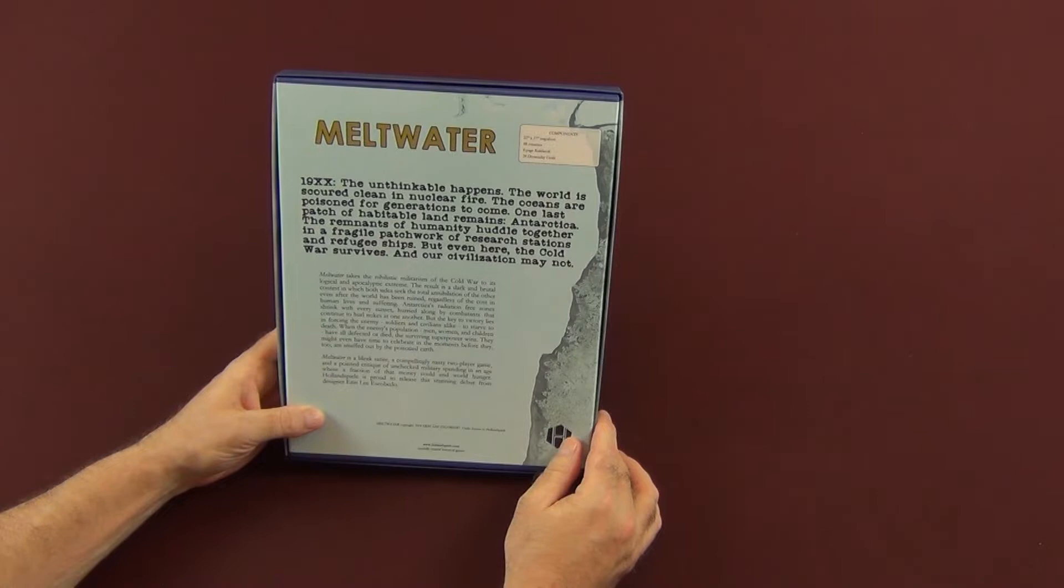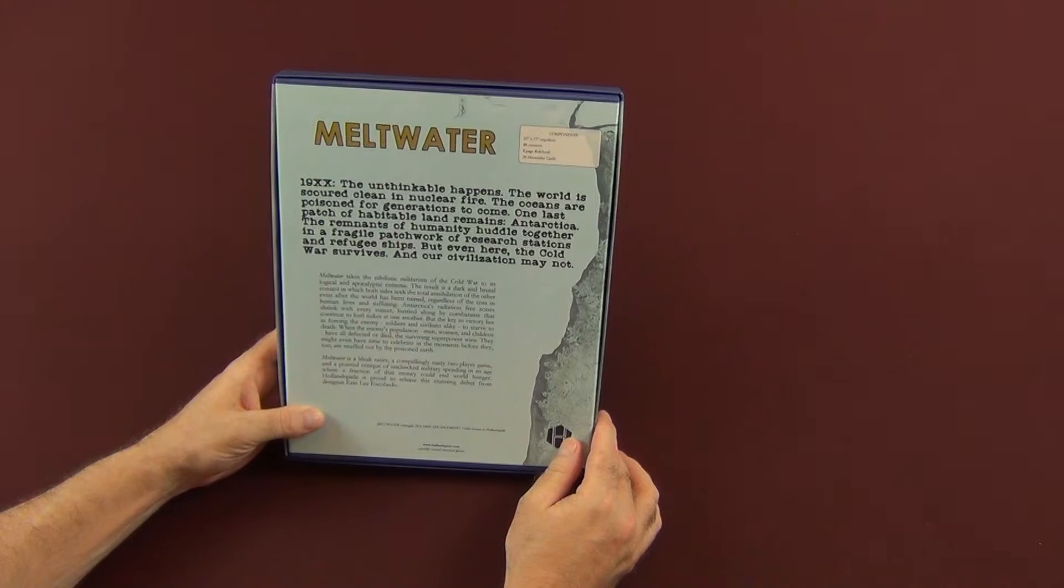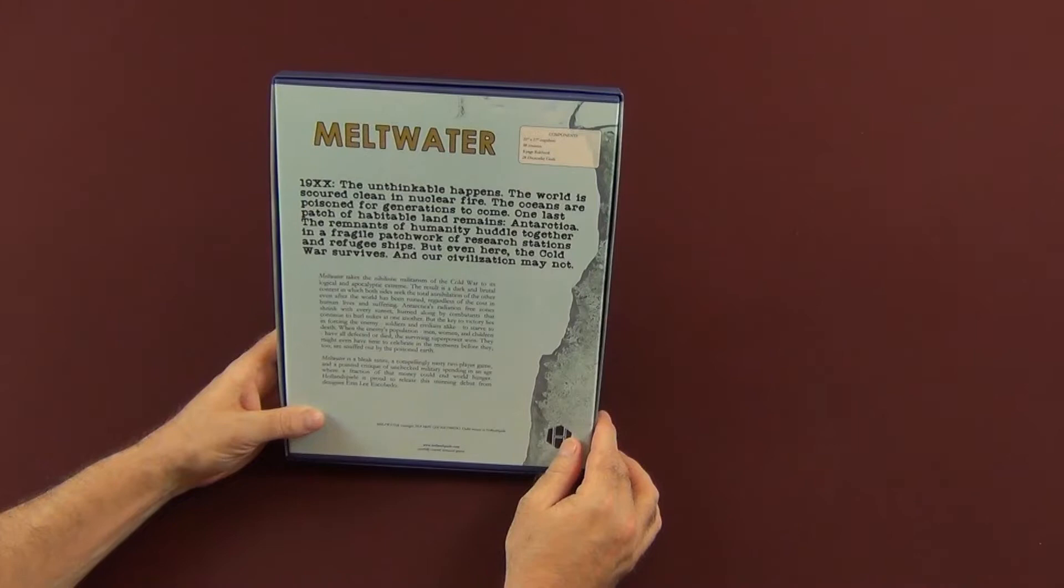Antarctica's radiation-free zones shrink with every sunset, hurried along by combatants that continue to hurl nukes at one another. But the key to victory lies in forcing the enemy, soldiers and civilians alike, to starve to death. When the enemy's population have all defected or died, the surviving superpower wins. They might even have time to celebrate in the moments before they, too, are snuffed out by the poisoned earth.